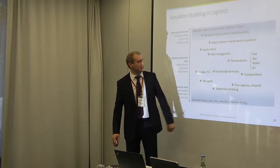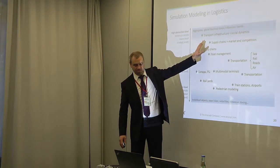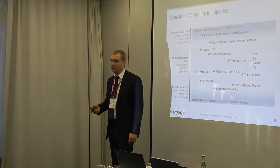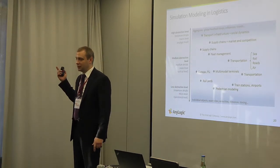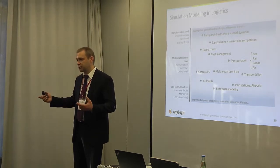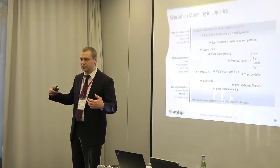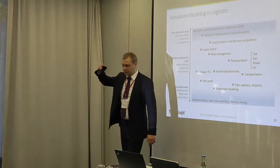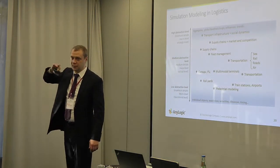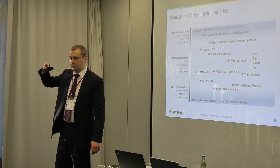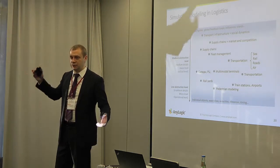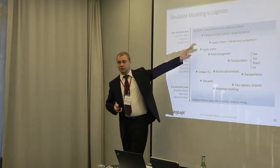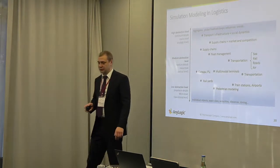At the higher abstraction level, there are models used to plan transportation infrastructure — for example, how to develop a city, what should be the road capacity in some districts, and what should be the road capacity between districts. They use simulation modeling to understand what to do with transportation infrastructure, and usually that's a government or public services problem.